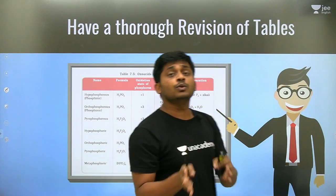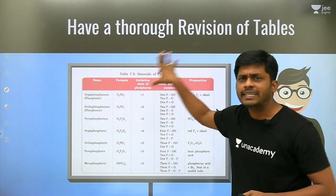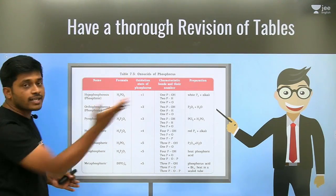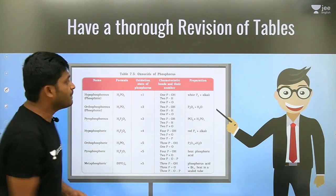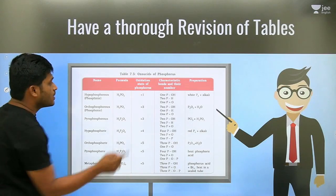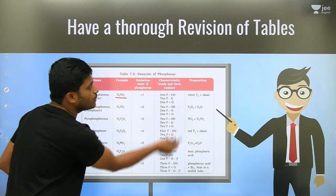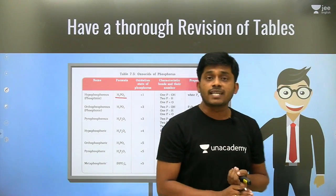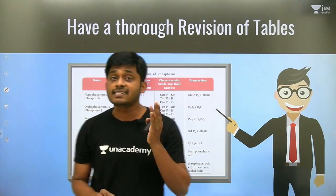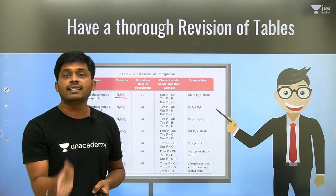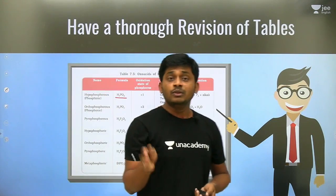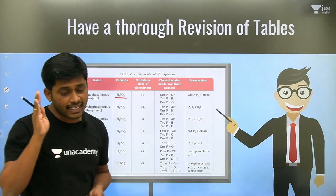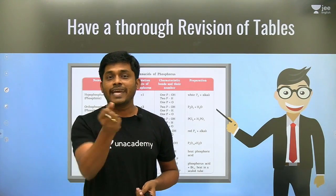In NCERT, every table contains every experimental data point. Go through every table — for example, the structure and preparation of phosphorus compounds, many previous questions have been asked from these. Tables cover oxide preparation, colors, oxo acid preparation and structures, sulfur oxo acids, alkali metals, alkaline earth metals — every group has a table. Going through every table is most important. Inorganic is really like a gift — grab the gift and score marks.